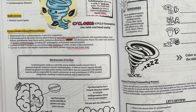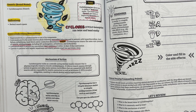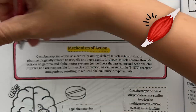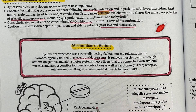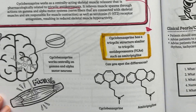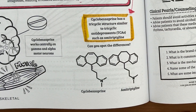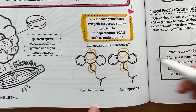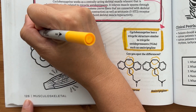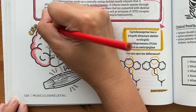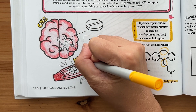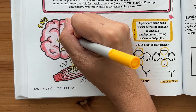Caution is needed in patients with hepatic impairment and elderly patients, so you want to make sure that you start low and titrate slow. Cyclobenzaprine works as a centrally acting skeletal muscle relaxant that is pharmacologically related to tricyclic antidepressants such as amitriptyline — their chemical structure is very similar. It works to relieve muscle spasms through actions on gamma and alpha motor systems, which are nerve fibers connected with skeletal muscles and responsible for muscle contraction. It also works as a serotonin receptor antagonist, resulting in reduced skeletal muscle hyperactivity.